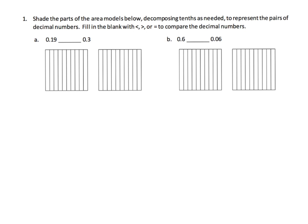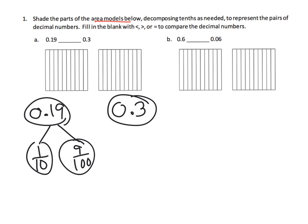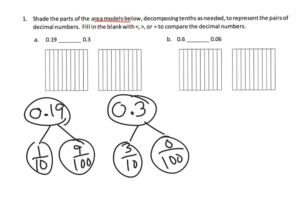On this set of problems we're being asked to use the area model to compare our values. We're going to look at 0.19 first. We need to remember that 0.19 is 1 tenth plus 9 hundredths. And then 0.3 means three tenths — we could call it zero hundredths if we wanted to.